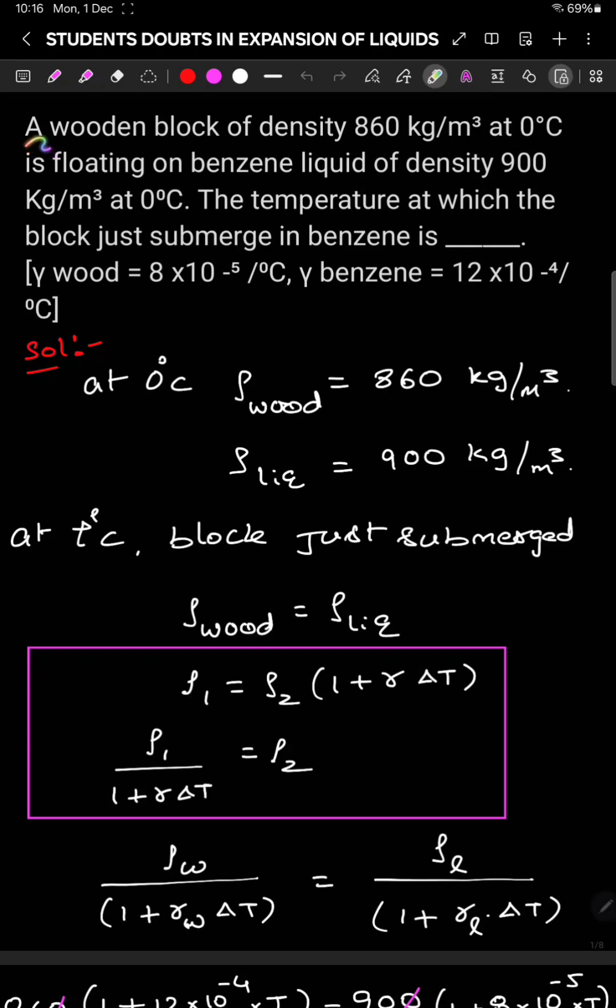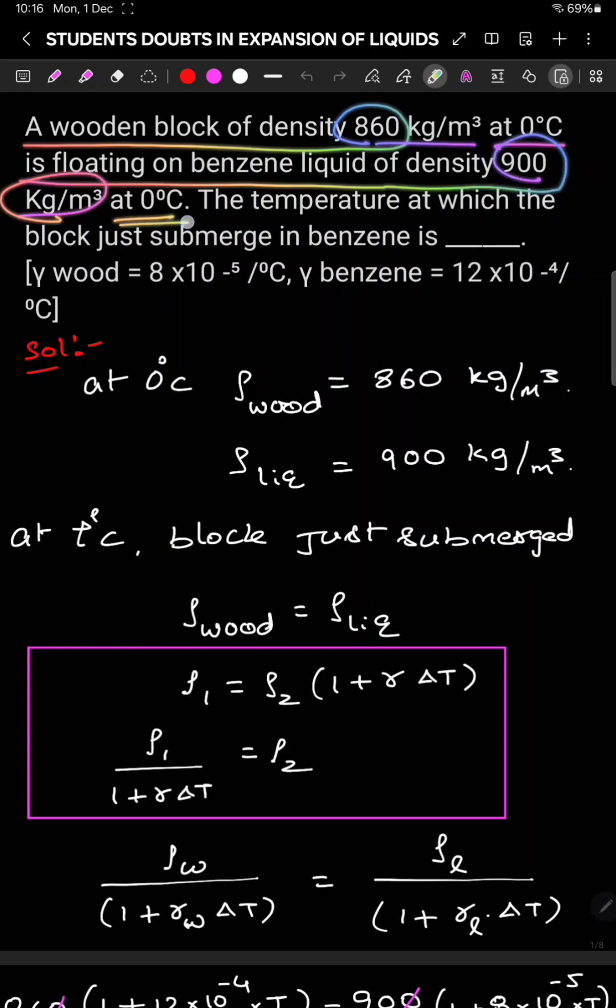In this it is given a wooden block of density 860 kg per meter cube at 0 degrees Celsius is floating on benzene liquid of density 900 kg per meter cube at 0 degree Celsius.